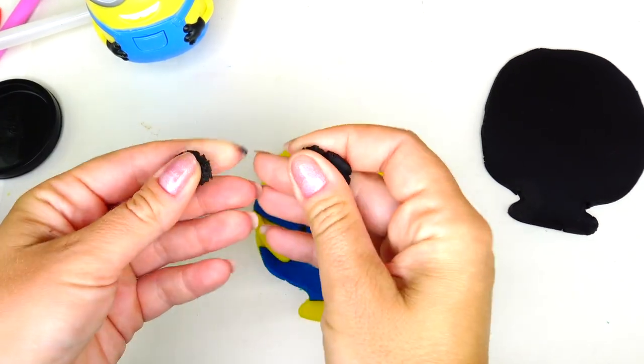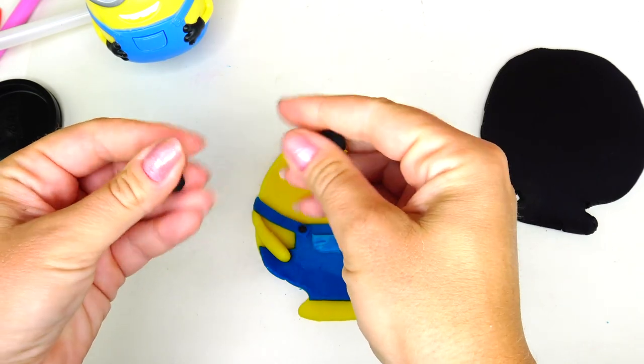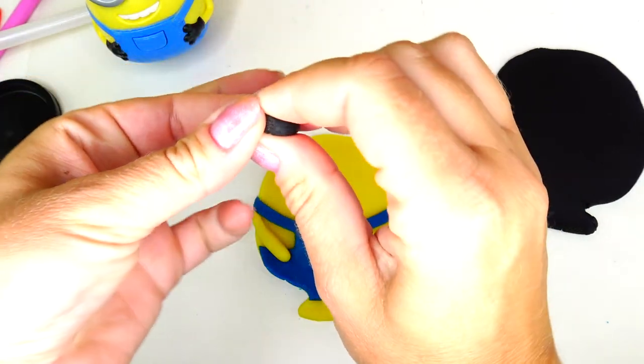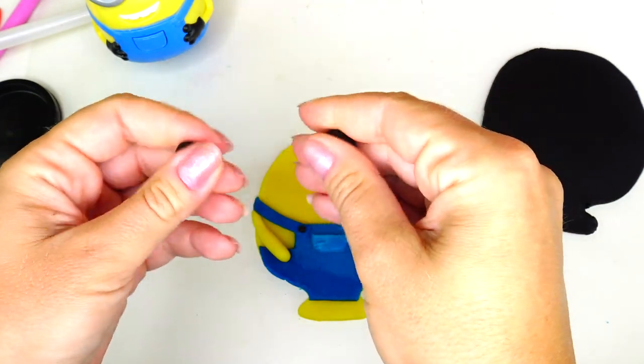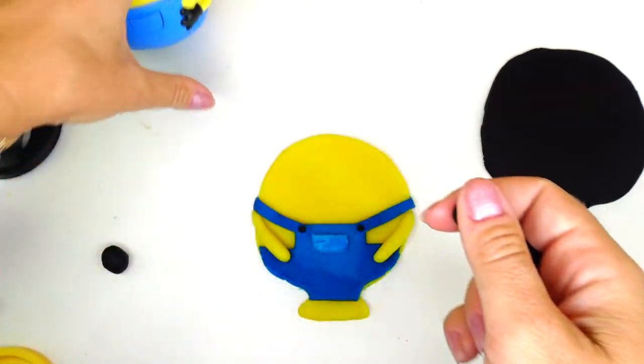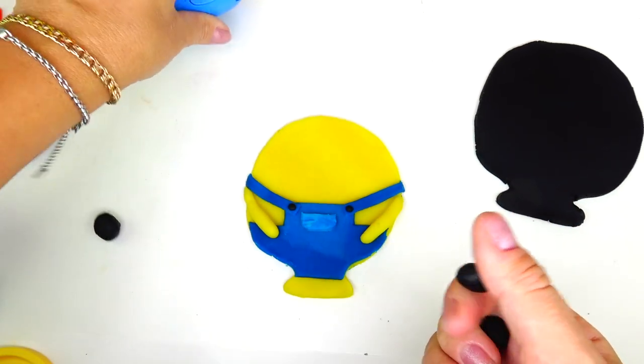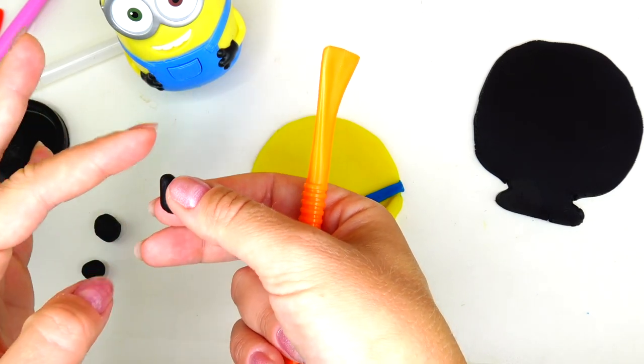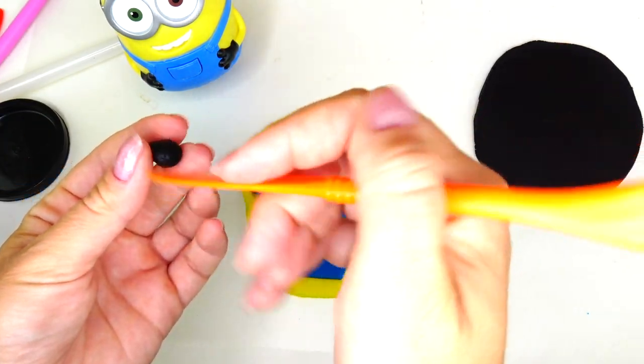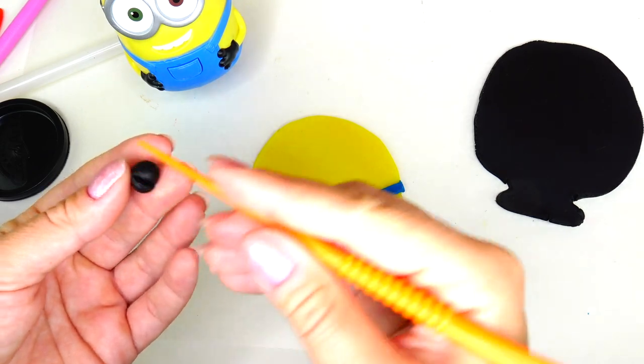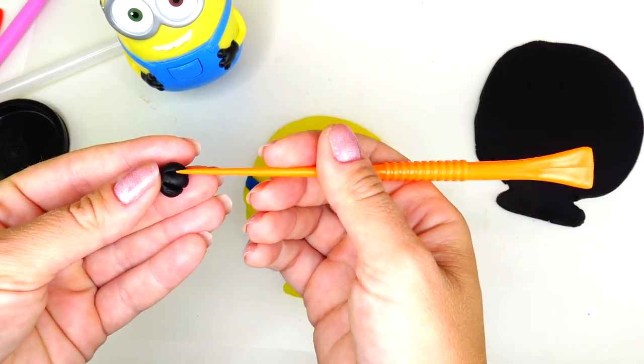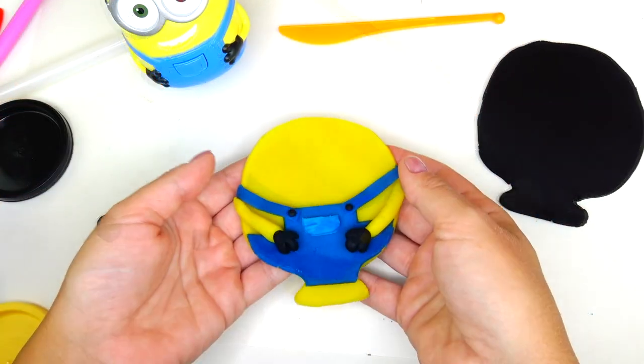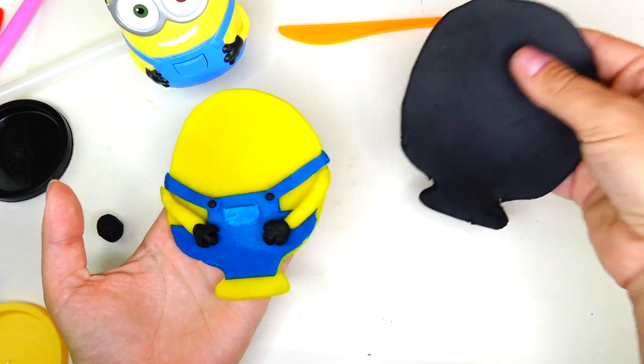Next, rolling two smaller size black balls. Actually maybe even smaller - I'm going to divide this ball into two pieces. Our minions have three fingers on each hand, so I made it into a pear shape, then I am flattening it on one side. Here I'm adding three fingers: one, two, three. Almost looks like a paw and we're going to do the same thing on the other side.